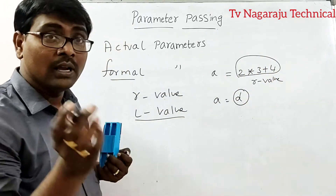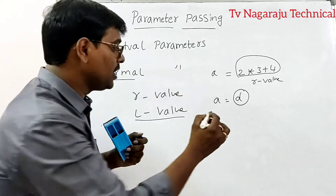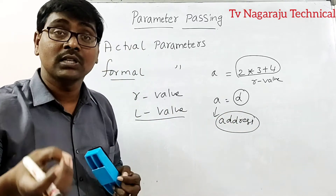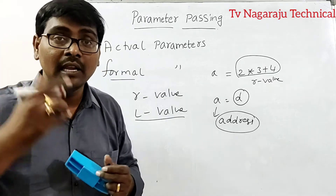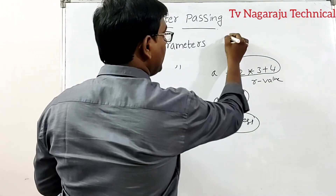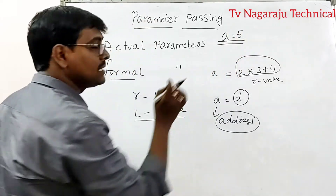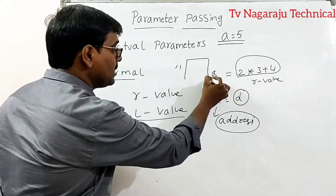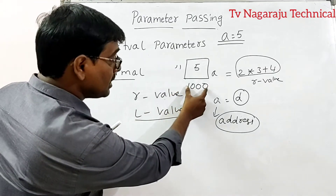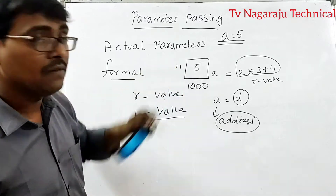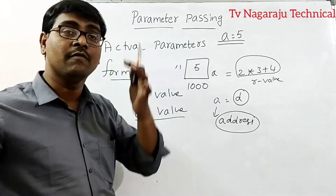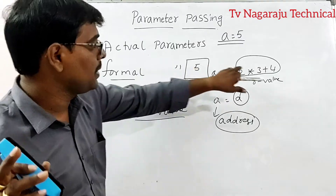L-value means simply a variable which consists of an address. L-value stores the address or the memory location where the R-value is stored. For example, in the statement a = 5, internally some memory is created with some address — say 1000 — and the value 5 is stored there. The address 1000 is the L-value, and 5 is the R-value.